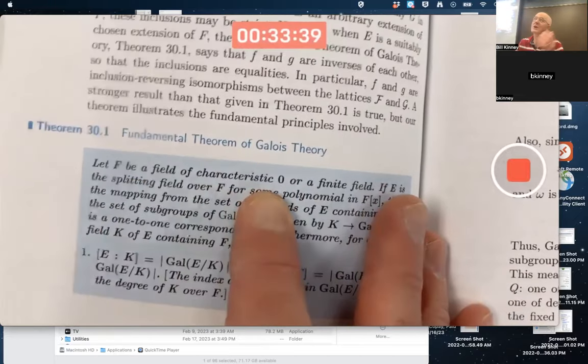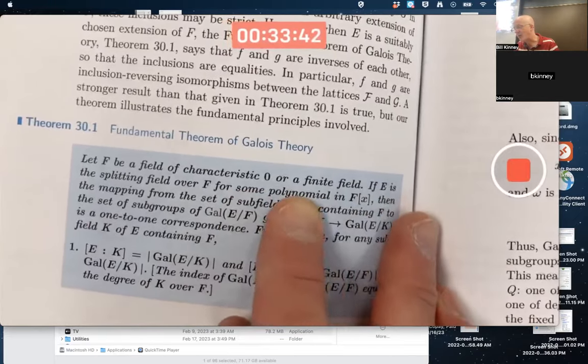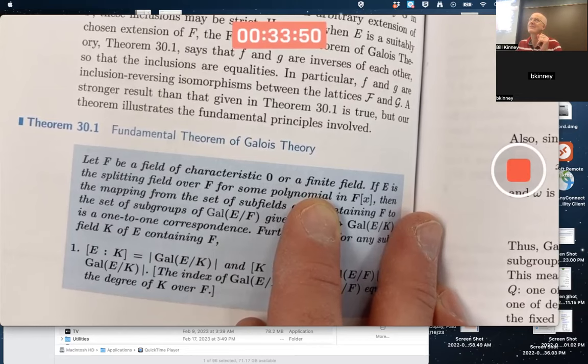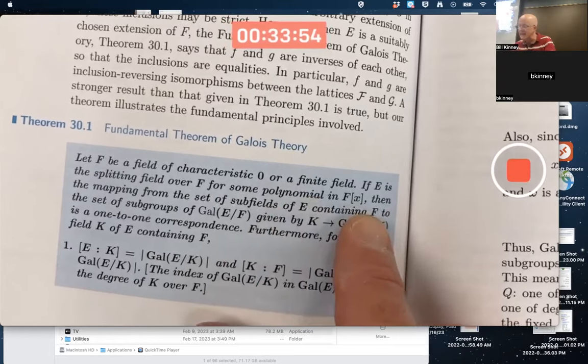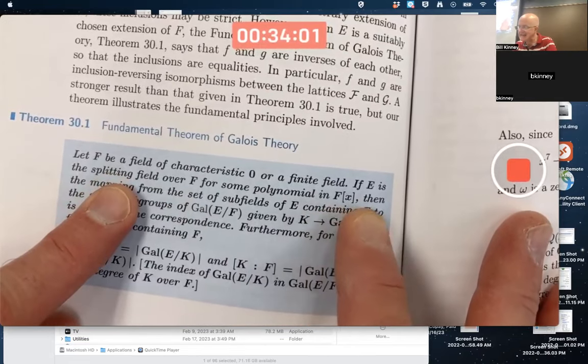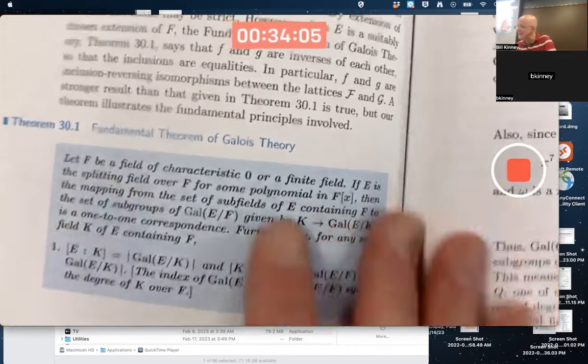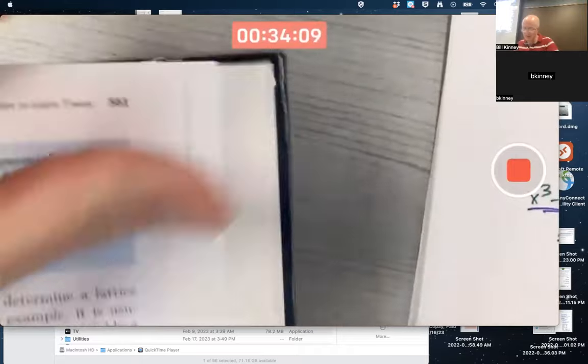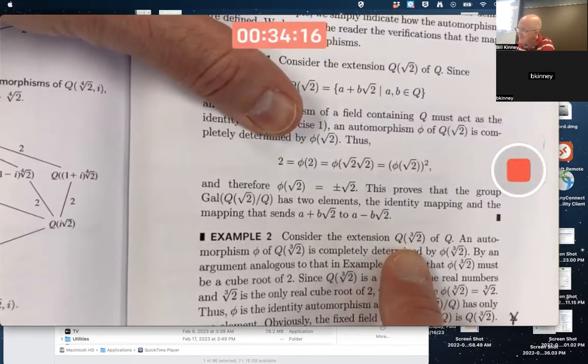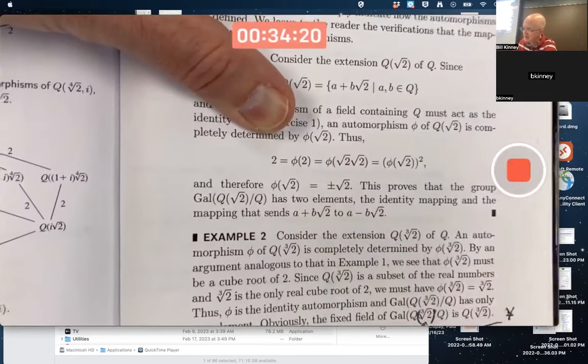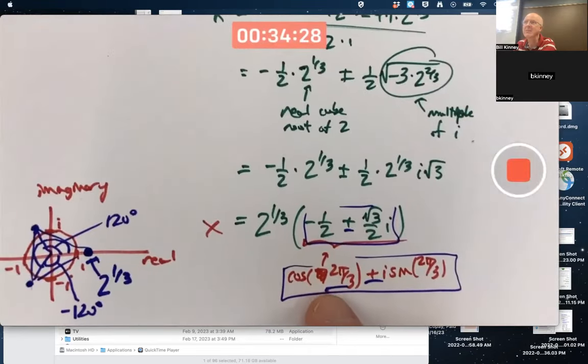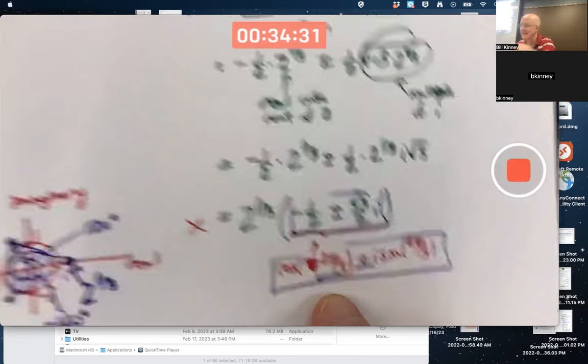Well, first of all, your field has to have characteristic zero, which ours does. Secondly, or a finite field, there are infinite fields that have a non-zero characteristic. We haven't talked about them, but if E is the splitting field for some polynomial in F[x], that's the key. E has got to be the splitting field over F for some polynomial. So Q adjoined cube root of 2, even though it contains cube root of 2, which is a root of that thing, it's not a splitting field for that over the rationals because it doesn't contain the other roots. You can't completely factor it in there.